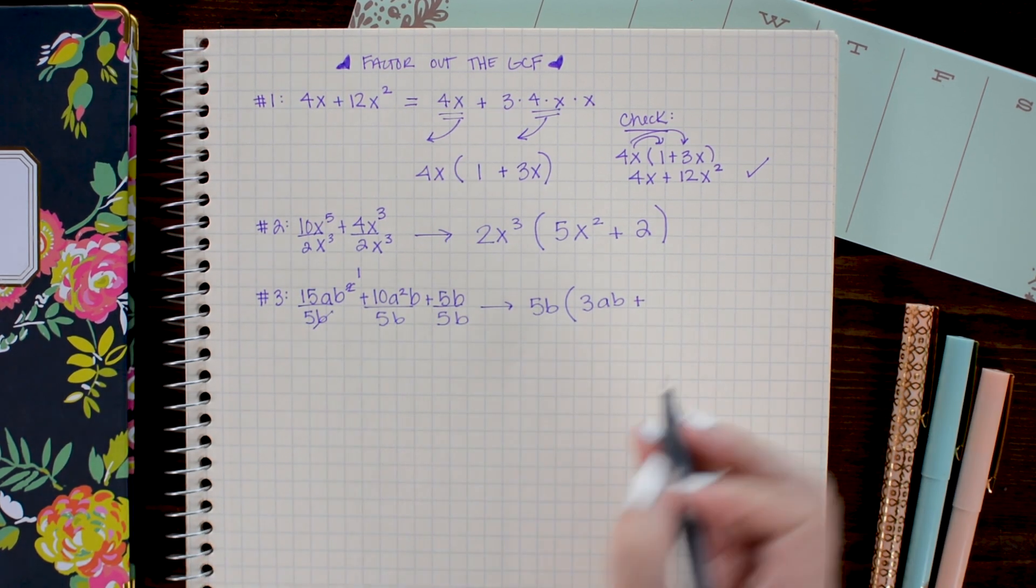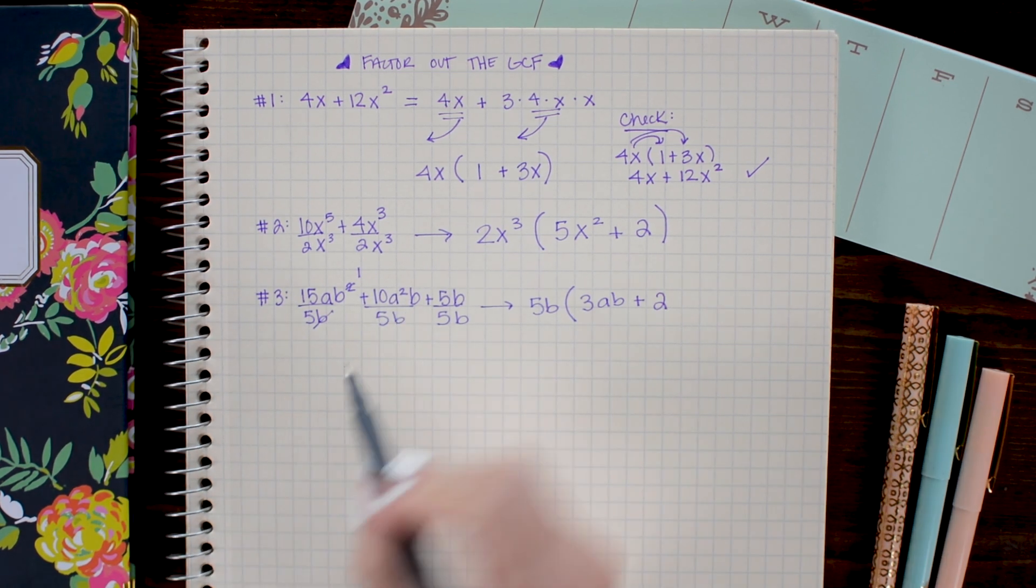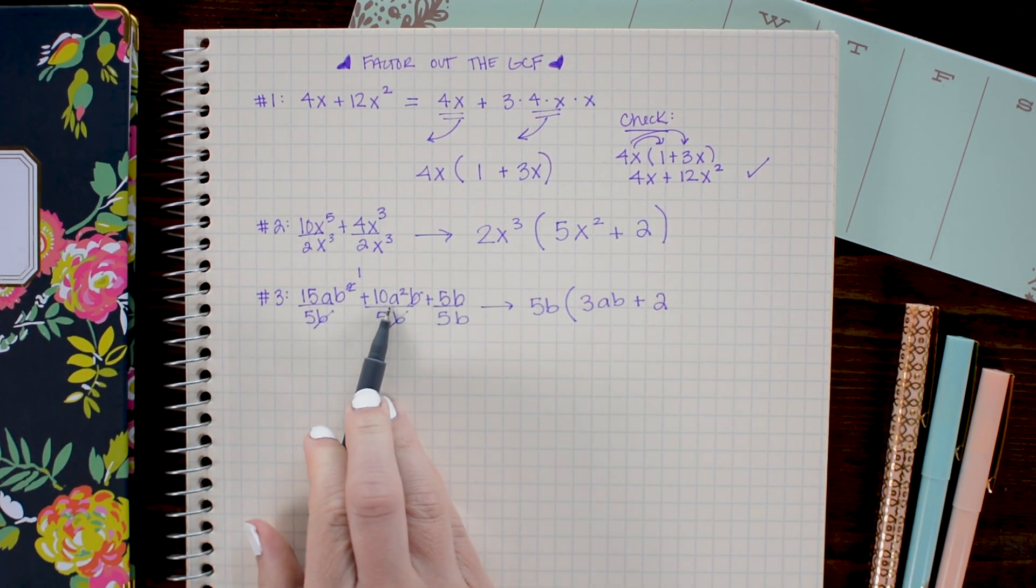On our second term we have 10 divided by 5 which is 2. a squared b divided by b, the b's cancel out, and I'm left with a squared.